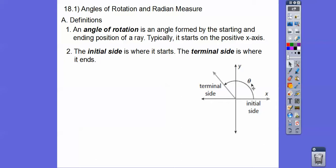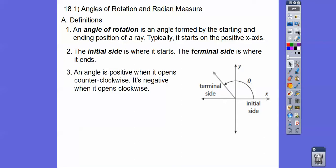Theta looks like a zero or an O with a little line slash through it. When an angle is positive, it goes counterclockwise. When it's negative, it starts here and goes in this direction. So this is 0 degrees, here would be 90 degrees, this straight line would be 180 degrees, then 270 degrees, and all the way around is 360 degrees.